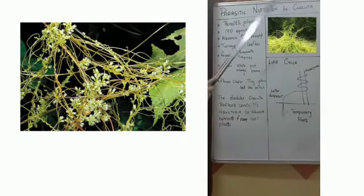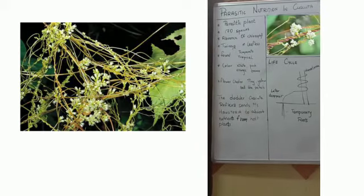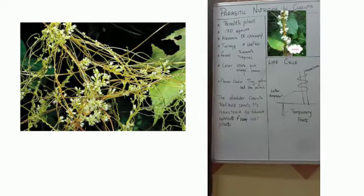Parasitic nutrition in Cuscuta. Dodder is a parasitic plant which belongs to genus Cuscuta. There are around 170 species in this genus. Dodder is an example of parasitic plant nutrition.